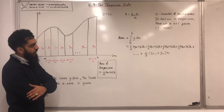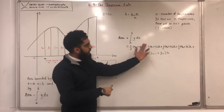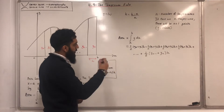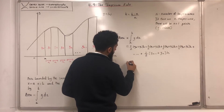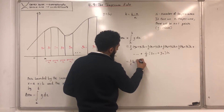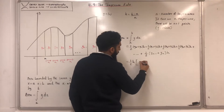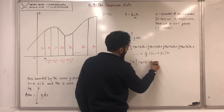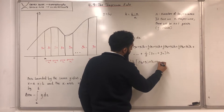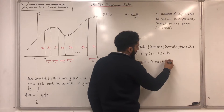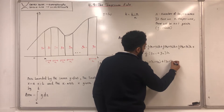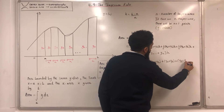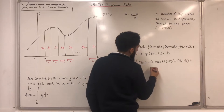Now, what do we see here? Between each of these terms, we have a common factor of one-half h, so we can take out one-half h. Inside the square bracket, I can put y₀ plus y₁, plus y₁ plus y₂, plus y₂ plus y₃, plus y₃ plus y₄, plus dot dot dot plus...